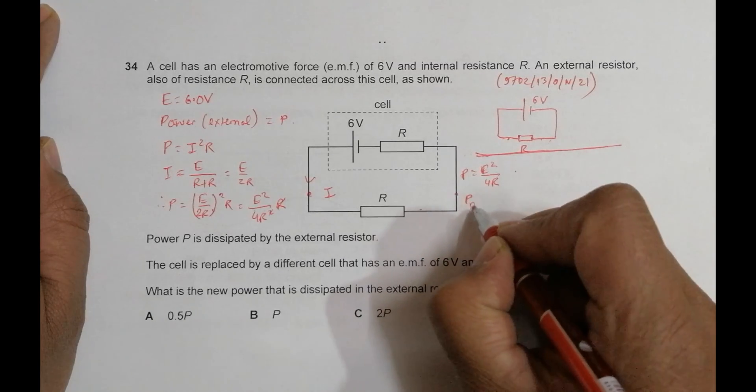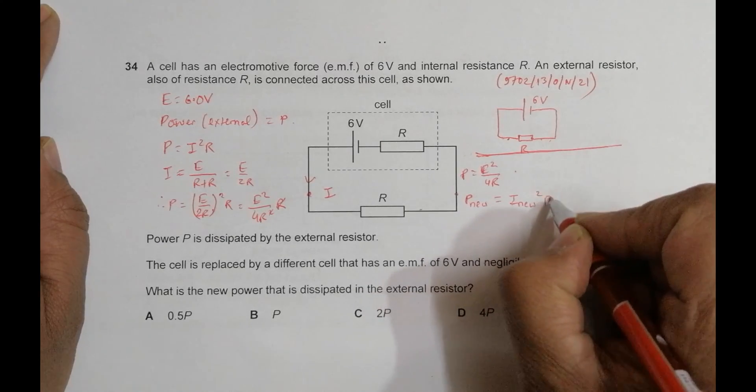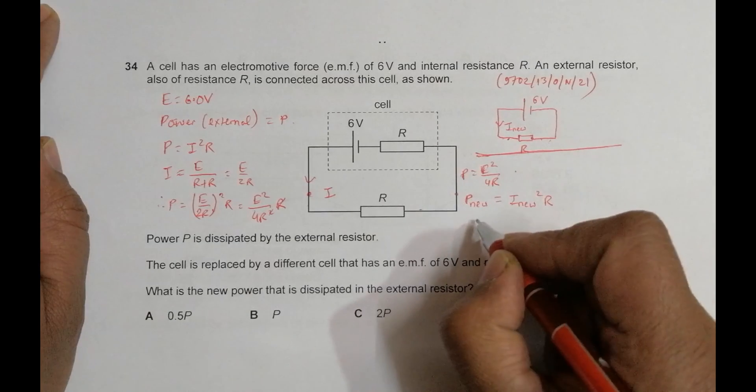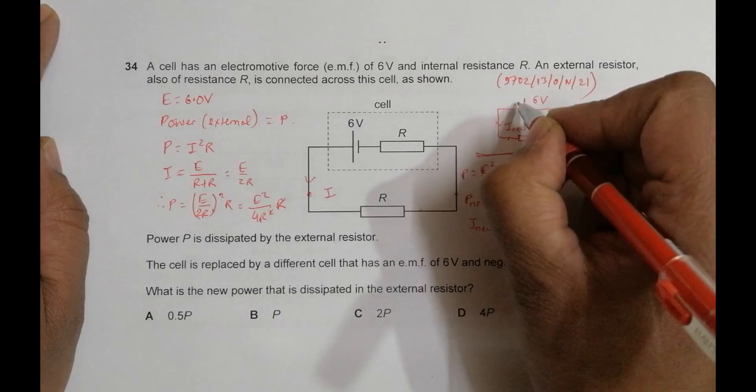The new power is P_new = I_new² × R. The new current I_new = E/R.